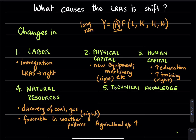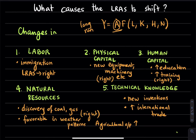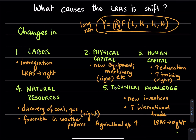The last factor, A, represents changes in technical know-how or technical knowledge over time. If there are new inventions employed in production or there is more international trade — remember that our production possibilities frontier shifts outward — with international trade or improvements in technology we're able to produce more. That would also cause the long-run aggregate supply curve to shift to the right, placing us at a higher natural level of output than before.